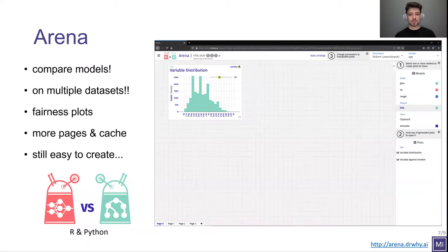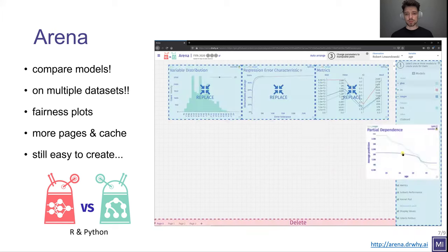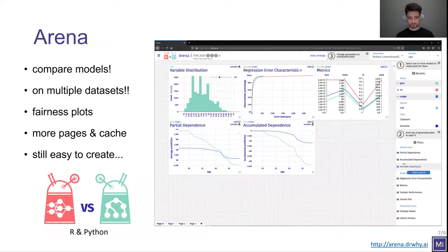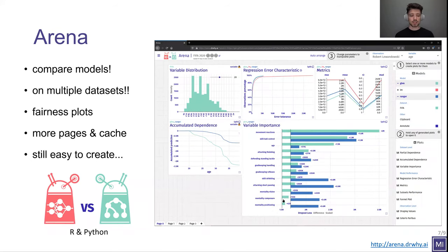The ARENA dashboard is an advanced tool that allows you to compare multiple models and show various explanations next to each other for them. What is more important, you can also compute these explanations on multiple data sets.